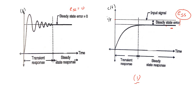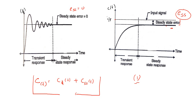So the total time response is equal to the time response for transient plus the time response for steady state. That is time response analysis. I hope you understand what is time response analysis. If you have any query, you can write in the comment section. I will discuss in the next video. Thank you very much.